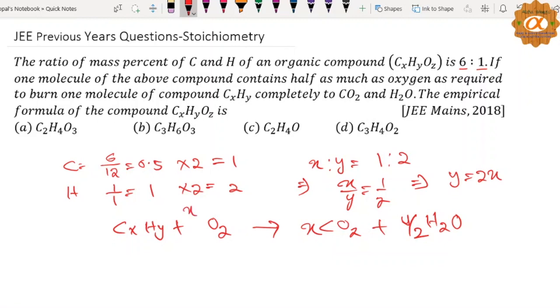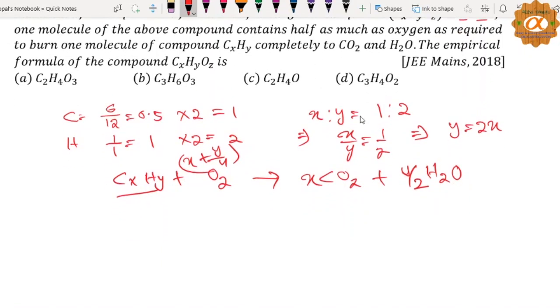X plus Y by 4 mol of O2 is required for complete combustion. उसने बोला half इसका half है, लेकिन यह O2 है, that means half of X plus Y by 4 of O2. अब यह O2 को अगर half कर दें तो यह हो जाएगा X plus Y by 4 oxygen atoms.